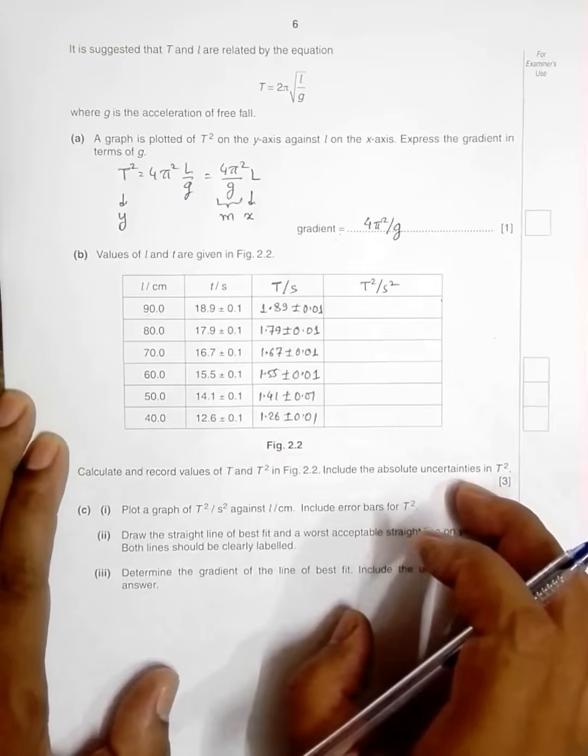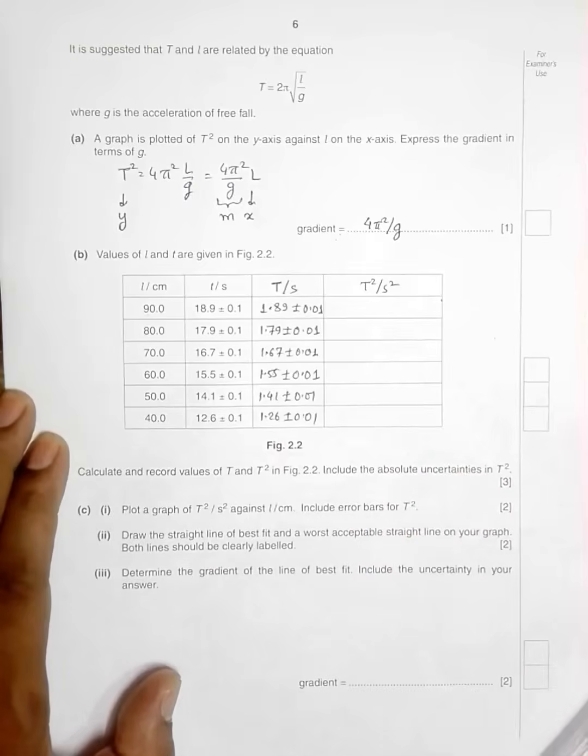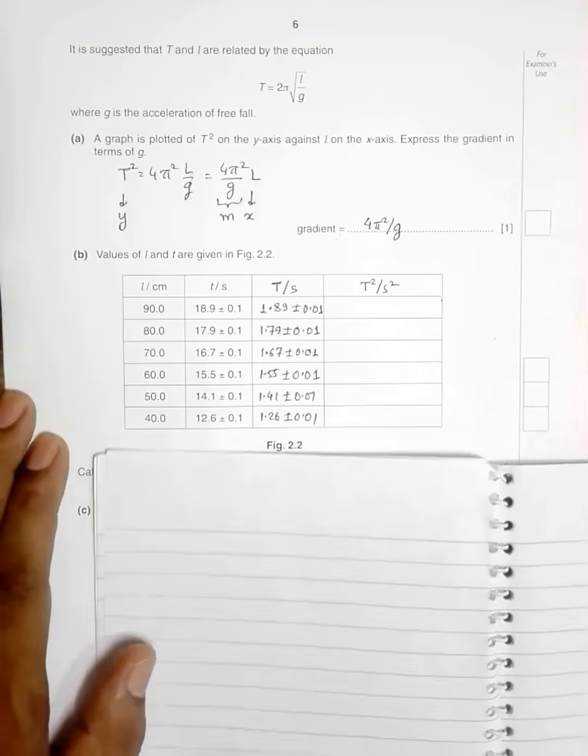Now the main issue is with T² so for this we can make a derivation here to find the error of T². That requires me to use another copy. In the exam we have a blank page but here we don't have, so that's why I am using a different copy. So let's calculate the value of error of T².